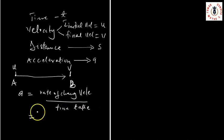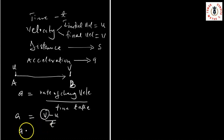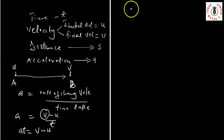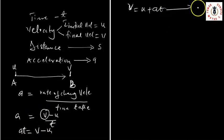That's obviously A = (V − U) / T. Now, if A = (V − U) / T, and I want to make V the subject of the formula, I can cross-multiply so that AT = V − U. If AT = V − U, then V = U + AT. Let's call this our first equation of motion — equation 1.